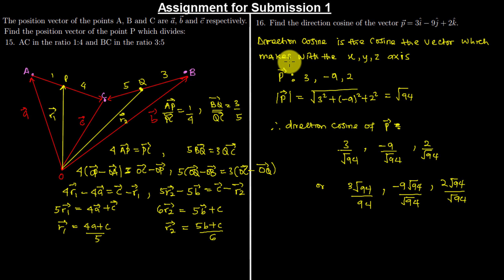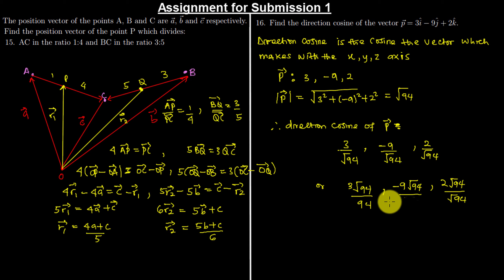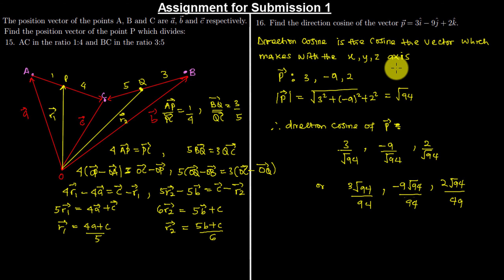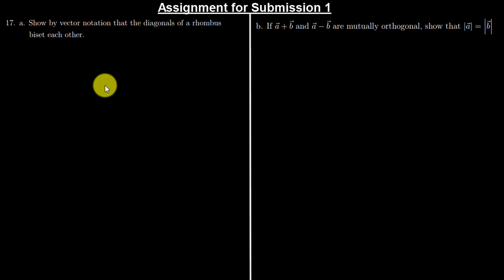We can simplify 2√94/94 — since 94/2 = 47 — to get 2√94/47. So these are the direction cosines of this particular vector. Let's move on to the next question.